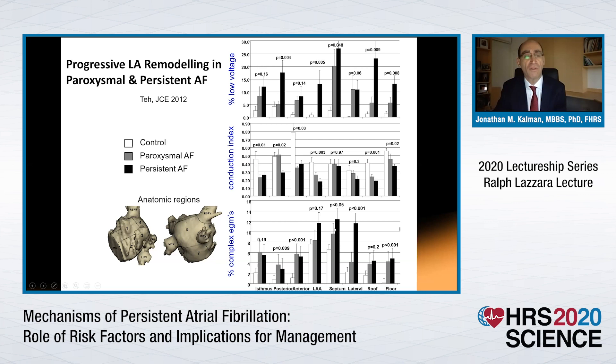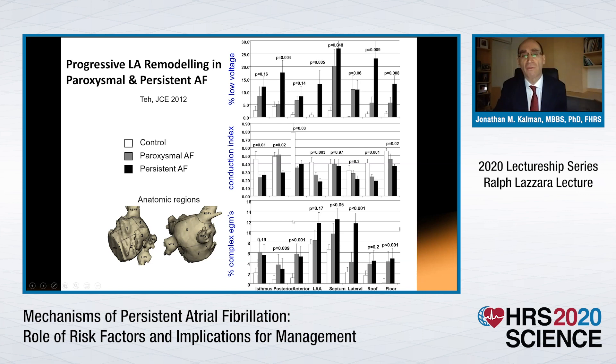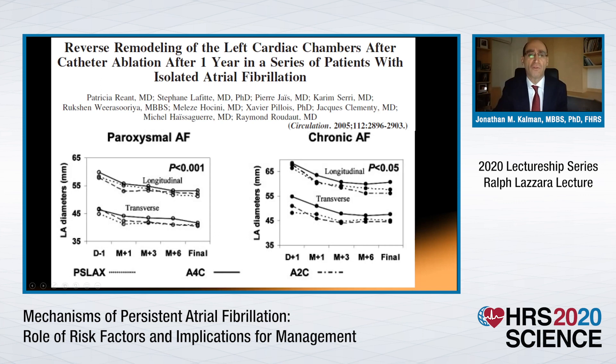We know that persistent atrial fibrillation has more significant remodelling than paroxysmal atrial fibrillation, compared with a control non-AF group. The percentage of low voltage is greater, conduction slowing occurs more markedly, and the percentage of complex electrograms is also greater in persistent compared with paroxysmal AF. What we don't know is to what extent this is driven by the arrhythmia itself versus the underlying remodelling process, and importantly, to what extent this process is reversible.